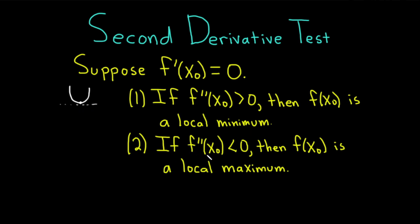The second condition says the second derivative is negative, which would imply concave down. The fact that the first derivative is 0 at x0 would imply the graph has a hill shape locally near x0. It's easy to memorize — you can think of it as backwards: it's positive, so you have a min; it's negative, so you have a max.